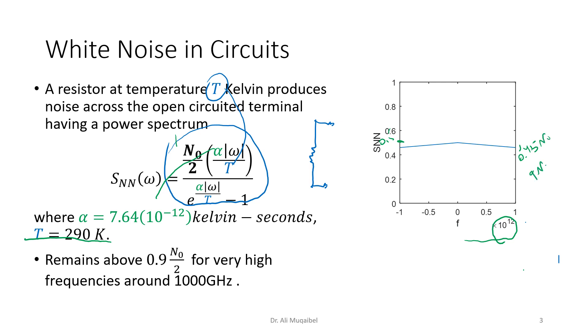What we want to say is that the value of the spectrum is almost constant for a huge bandwidth. This is why we assume that the noise generated by a resistor is white noise. 1000 gigahertz for lots of applications is considered high frequency.